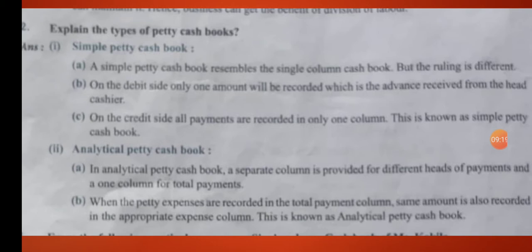The next type is analytical petty cash book. In an analytical petty cash book, a separate column is provided for different heads of payment and one column for total payment. When petty expenses are recorded in the total payment column, the same amount is also recorded in the appropriate expenses column. This is known as the analytical petty cash book.